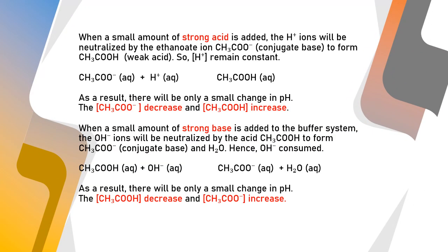What happens when a strong acid and strong base is added? When a small amount of strong acid is added, the H+ ions will be neutralized by the ethanoate ion to form acetic acid. So the concentration of H+ ions remains constant.